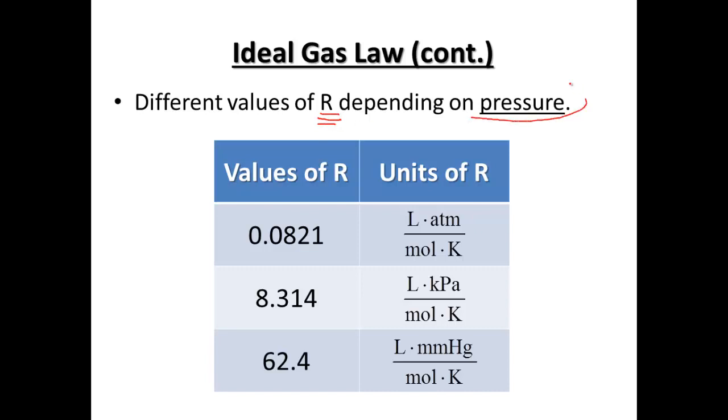Now this is our important part for R. Our R depends on pressure. So please make sure that you notice what pressure we are working with. Now the R value, number-wise, is here, and our units for the R value are here. So if we're in atmospheres, kilopascals, or millimeters of mercury. So if you're dealing in atmospheres, your number would be 0.0821, and your units, liters times atmospheres over mole times Kelvin. So that would be your R value to use if we were seeing atmospheres being used.